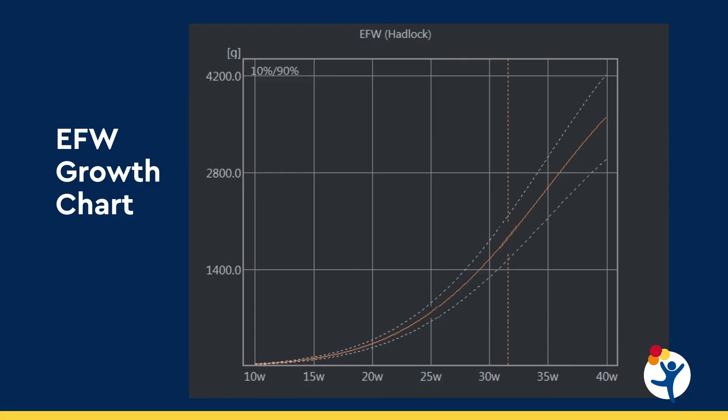IUGR is a term used interchangeably with fetal growth restriction and small for gestational age to describe a fetus that measures small for its gestational age in pregnancy. IUGR is most commonly defined as an estimated fetal weight less than the tenth percentile. This graph shows estimated fetal weight across gestation, with weeks on the x-axis and estimated fetal weight in grams on the left axis. The bottom white line represents the tenth percentile, and if a fetus is noted to be below that line at any point, it is referred to as IUGR.